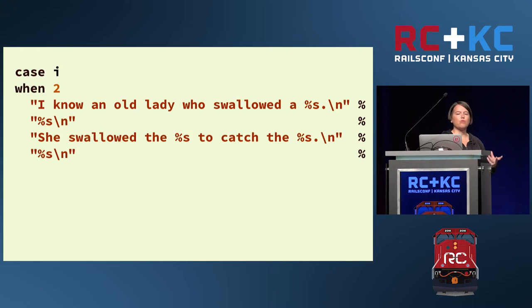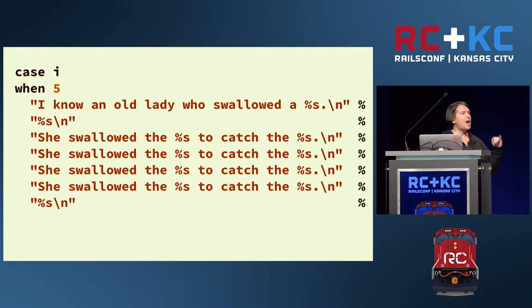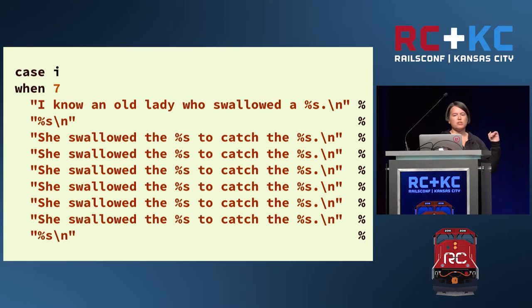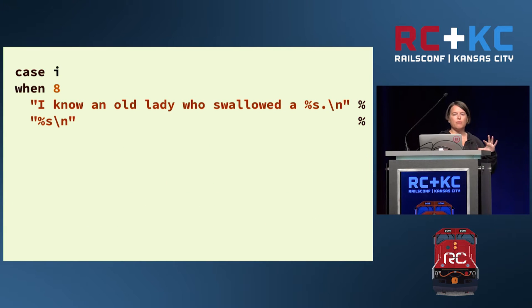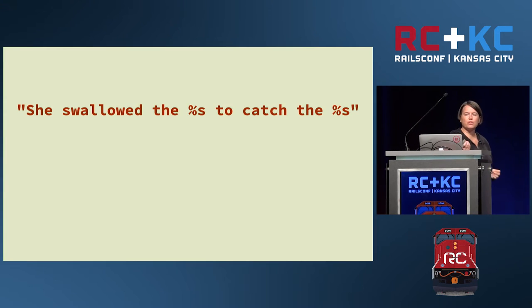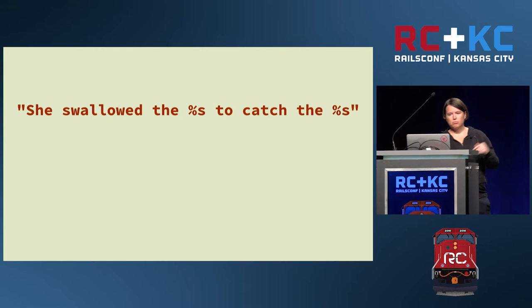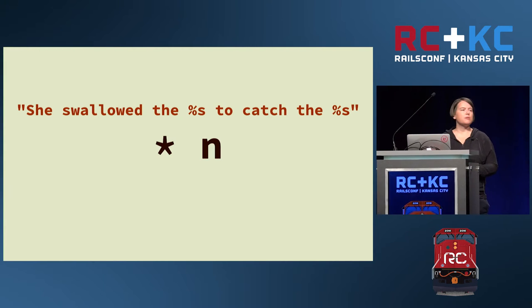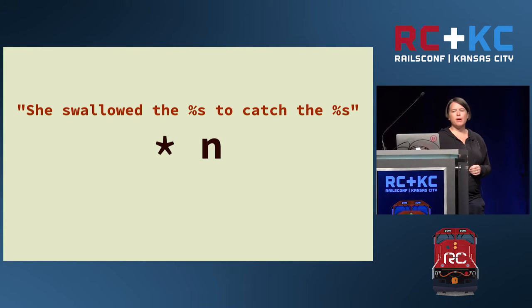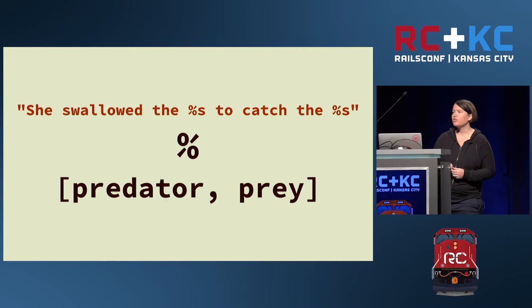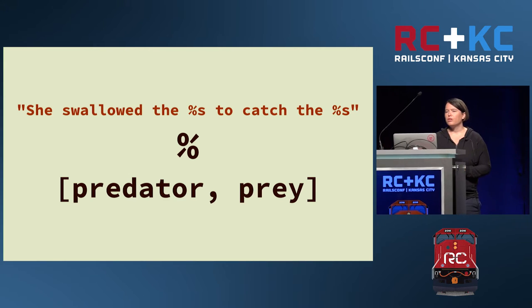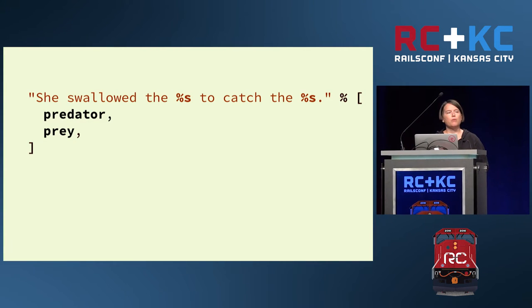Each verse grows systematically, adding repetitions, and finally stops abruptly. Most of the verses take a phrase and repeat it some number of times, passing in a number of different creatures. It's not a lot of code, but it does seem like a complete thought, and I'd like to name it.